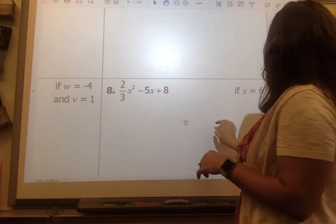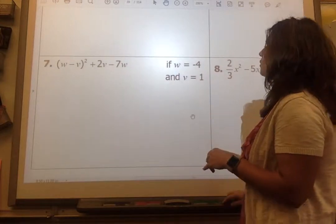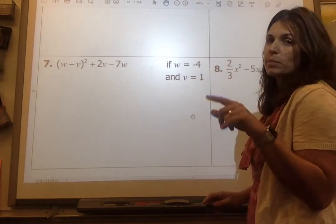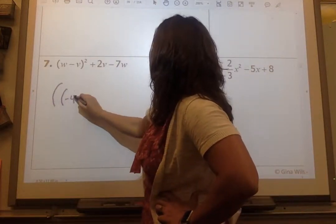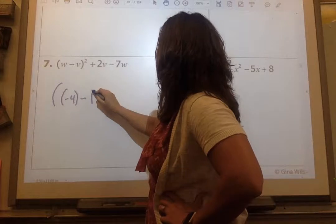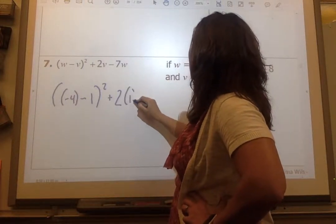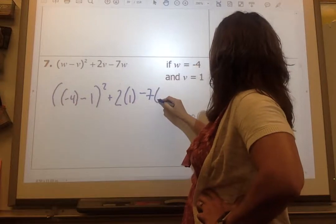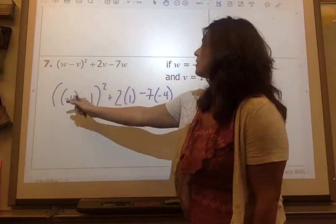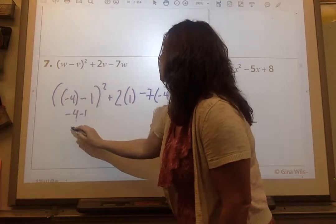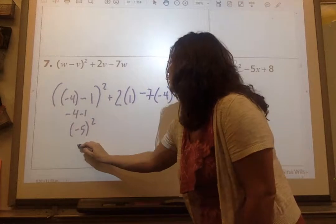Let's do 7 and then we'll go a little bit to the back page. Let's take a look at my setup. Parentheses, this is negative 4 minus 1 squared plus 2 times 1 minus 7 times negative 4. So I'm going to look inside my parentheses and I get negative 4 minus 1, which is a negative 5. Negative 5 squared is 25.